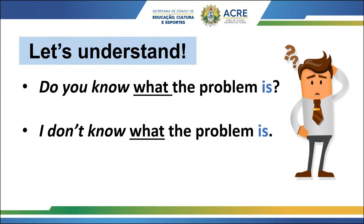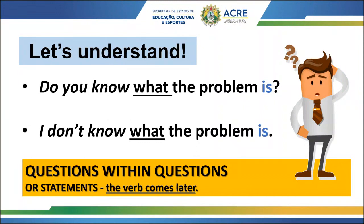'I don't know what the problem is.' Did you notice the difference in the position of the verb 'to be'? Now the verb 'to be' is at the end of the sentences. We have questions within questions or statements — we can call them indirect questions. In this situation, the verb comes later in the sentence.